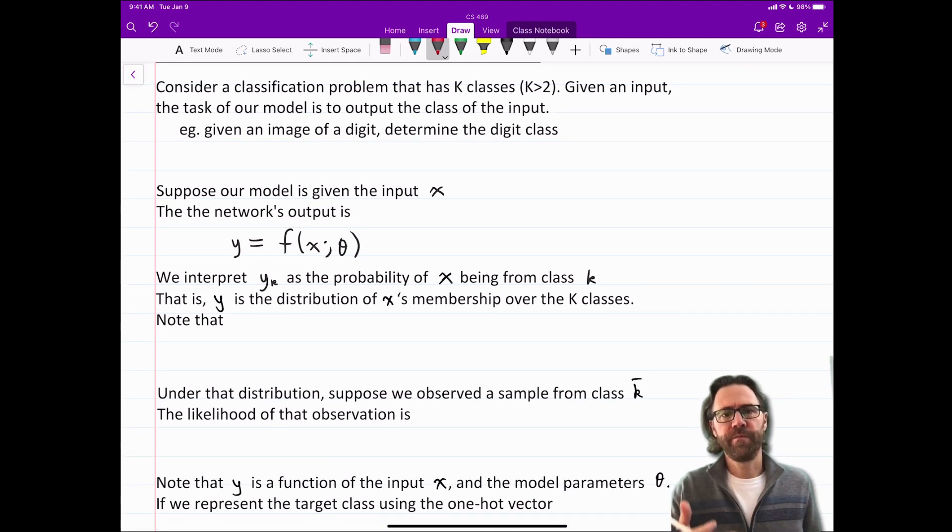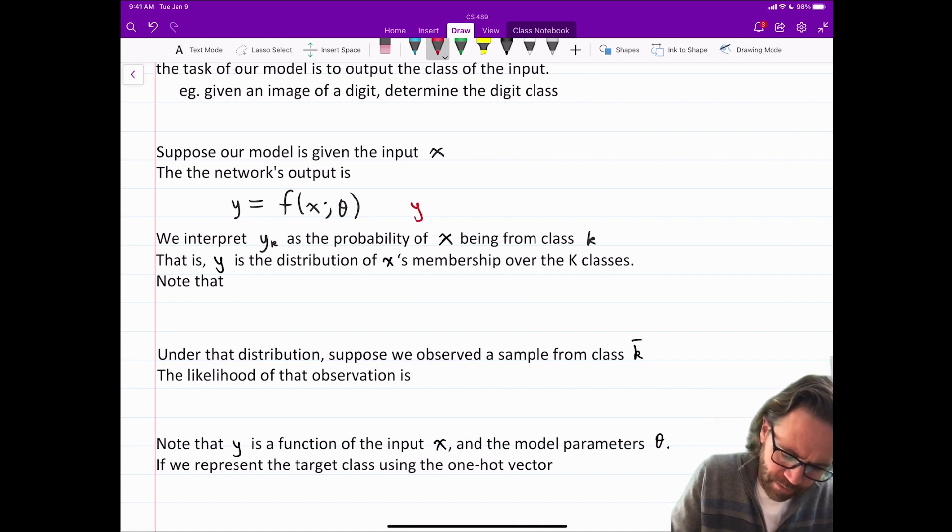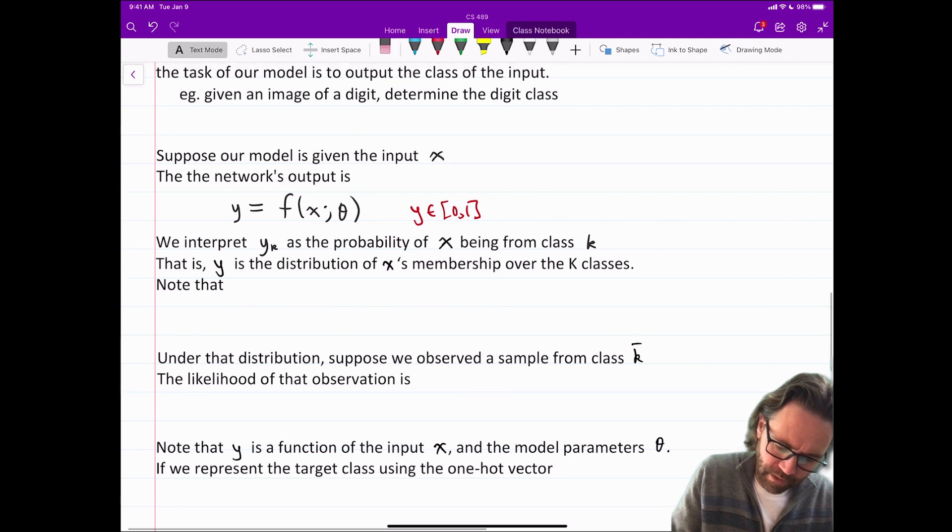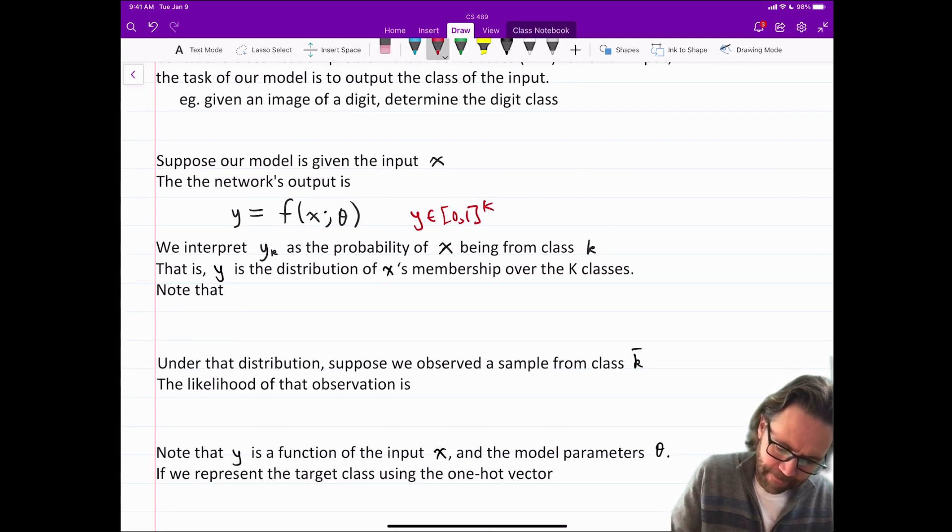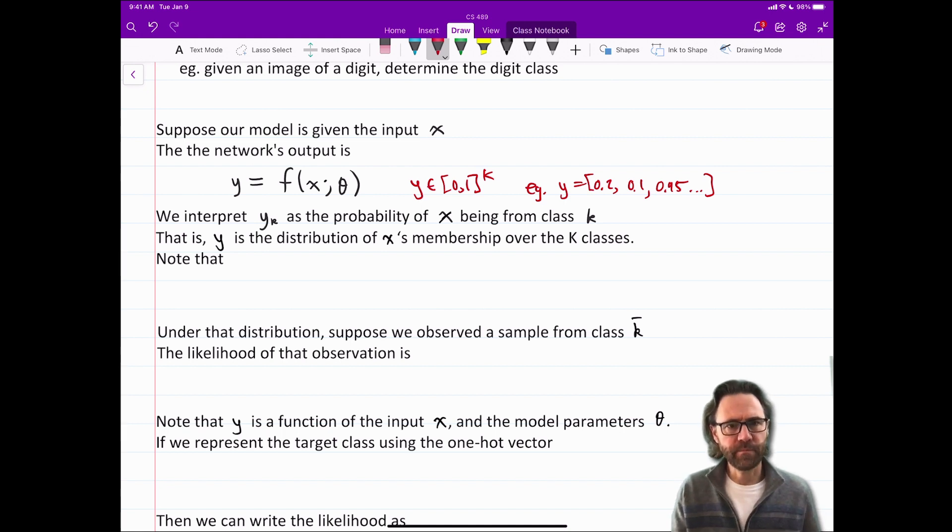So suppose our model is given the input X and the network's output is Y which comes from F of X given our parameters theta. So we interpret Y sub K as the probability of X being from class K. So Y this output Y then is not just a single number anymore. Y would be an element of zero one to the power K, big K, where we have K classes. So for example Y could be 0.2, 0.1, 0.95. All between zero and one.